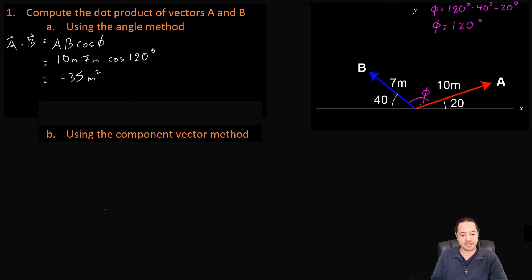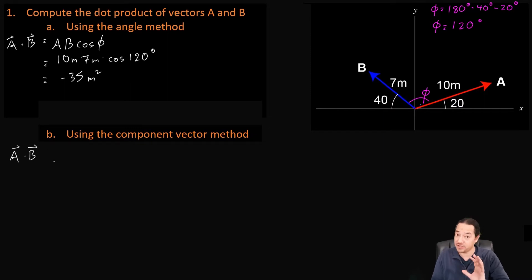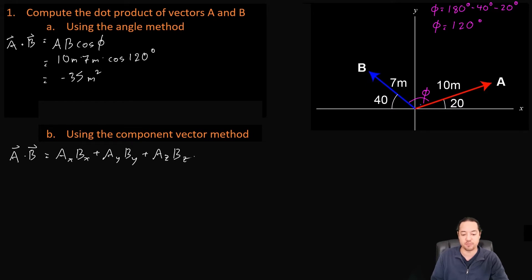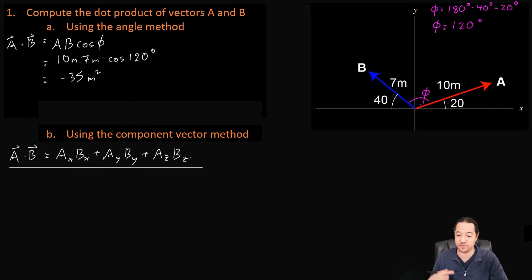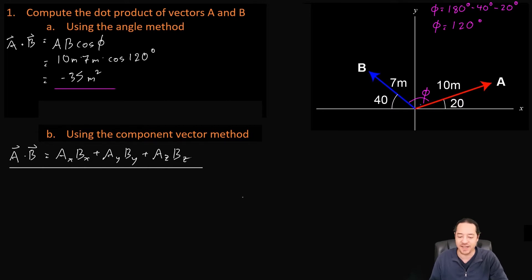Let's take a look at using the component vector method. We're going to use the other way of calculating the dot product. That's the formula where A dot B is equal to AX times BX plus AY times BY plus AZ times BZ. In this case, we're going to have to find the component vectors for A and B, and then plug them into this formula. Hopefully we're going to get the same answer. Let's try it out.